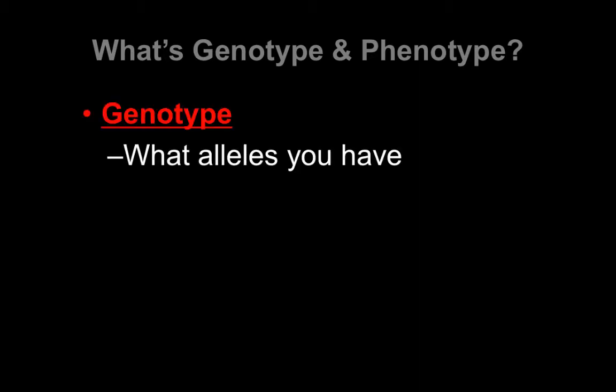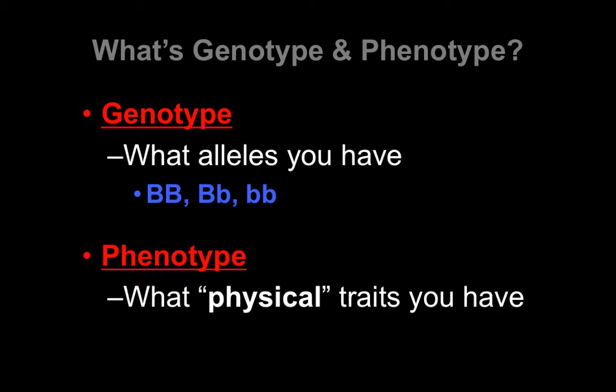Now let's look at how we talk about these things in terms of genotype and phenotype. Genotype is what alleles you have — in other words, which letters do you have? Phenotype is what physical traits you have. Think 'pheno-physical.' Genotype is the type of genes you have, while phenotype — like brown versus blonde hair — is what physical traits you actually express.